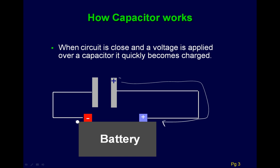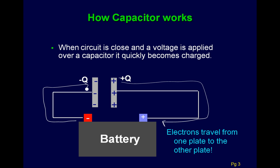Electrons at the negative side of the battery want to get over closer to that positive. This keeps happening while the capacitor charges up. At one point the capacitor gets to its full amount of charge — there will be a positive on one side and negative on the other side. This is essentially happening from electrons traveling from one plate to the other via the battery.